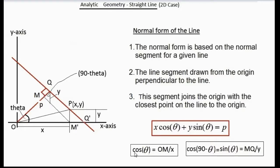Therefore, we can write the following two equations. Cos theta equals om by x, where theta is this angle. This angle happens to be 90 minus theta. So cos theta is the adjacent side, which is om, by the hypotenuse, which is x. Likewise, cos 90 minus theta is sin theta, which equals adjacent side mq divided by y. So that x cos theta plus y sin theta equals p. This is called the normal form of the line.